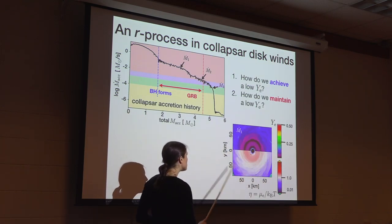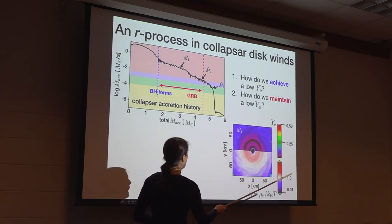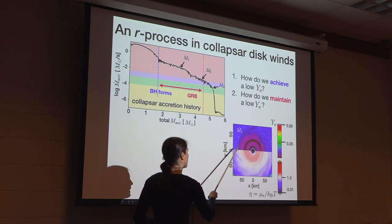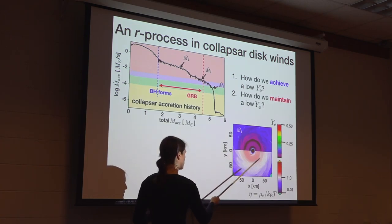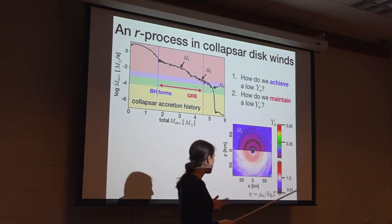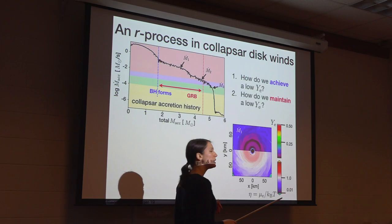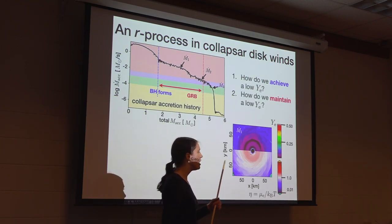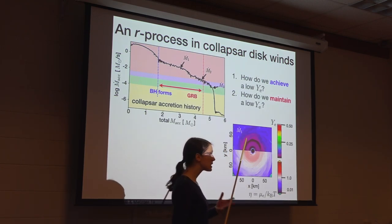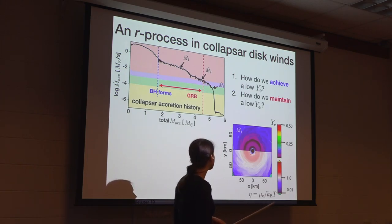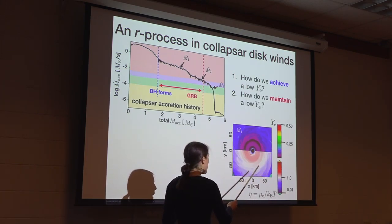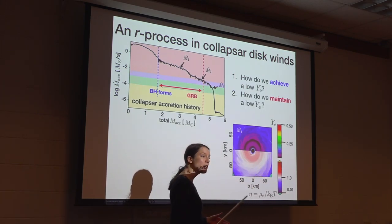This is showing the disk midplane, and we have Y-E, or electron fraction on top, and electron degeneracy plotted in the lower panel here on the bottom. What we found analyzing the simulations was that as long as the accretion rate was high enough, the densities in the disk became high enough that the electrons were driven to mild electron degeneracy.